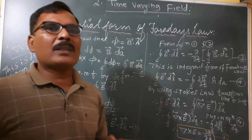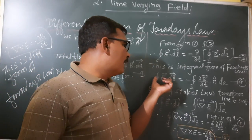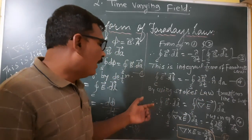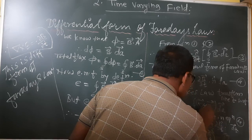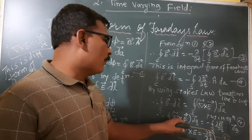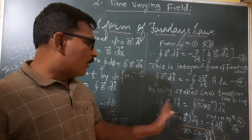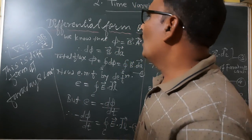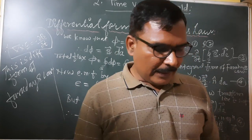By using Stokes' theorem — which is used to transform line integration into surface integration — the line integration of E-bar dot dL-bar equals curl of E-bar dot dA-bar. Substituting this, the surface integration of curl of E-bar dot dA-bar equals minus the surface integration of dB-bar by dt dot dA-bar. The surface integrations and dA terms cancel, and finally curl E equals minus del-B-bar by del-t. This is the differential form of Faraday's law of electromagnetic induction.